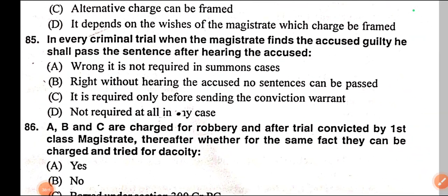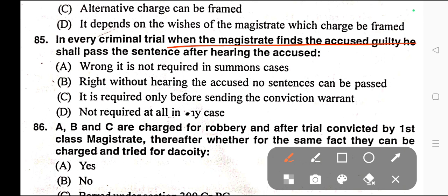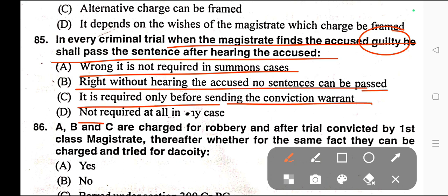Question number eighty-five: In every criminal trial, when the magistrate finds the accused guilty, he shall pass the sentence after hearing the accused. Options: A) Wrong — it is not required in summons cases, B) Right — without hearing the accused no sentence can be passed, C) It is required only before sending the conviction warrant, D) Not required at all in any case. Correct answer is option B — Right, without hearing the accused no sentence can be passed.